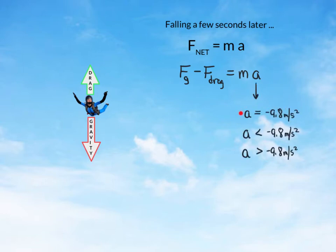Will her acceleration be equal to negative 9.8 meters per second squared, less than negative 9.8, or greater than negative 9.8? Pause and consider. Well, if you said her acceleration will be less than negative 9.8 meters per second, you would be correct. Since we're now subtracting this force of drag from the force of gravity, this acceleration number will be less. So she will not be in free fall, but she'll be accelerating at a rate of less than negative 9.8 meters per second squared.